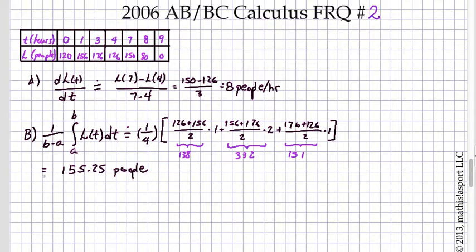Now for part C, we have to make sure we understand what's really being discussed. And that is, we have to find when the derivative of the number of people waiting in line must equal 0.